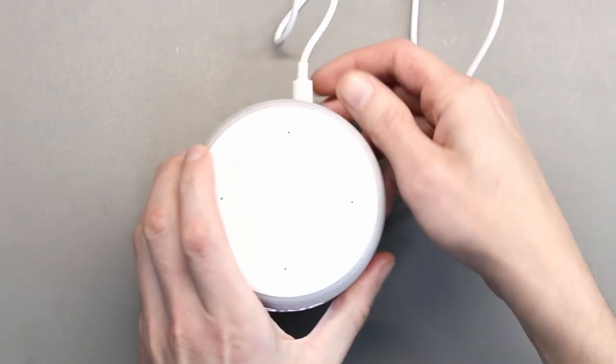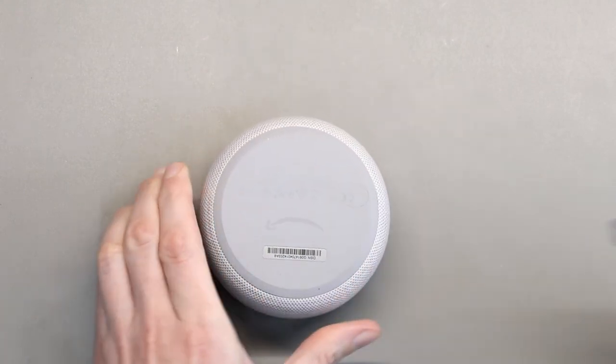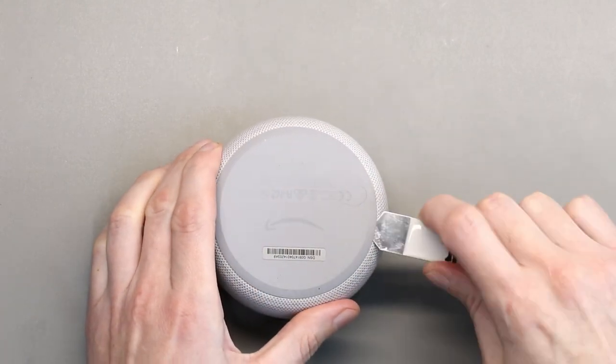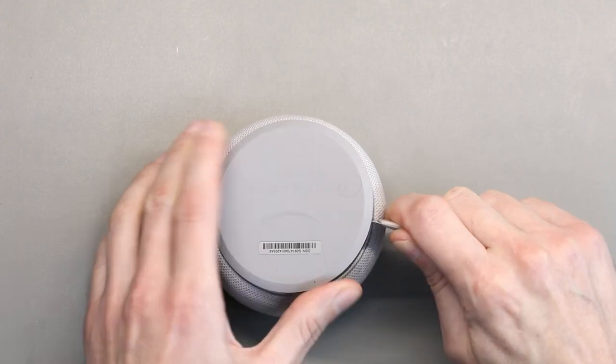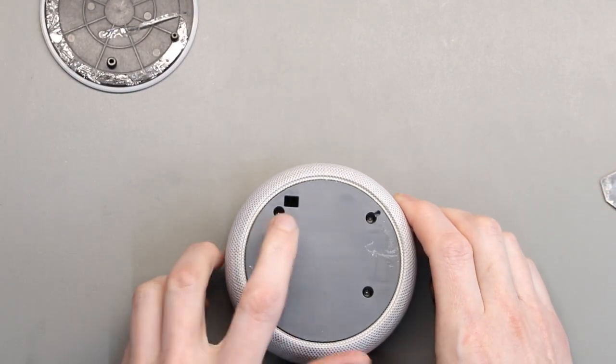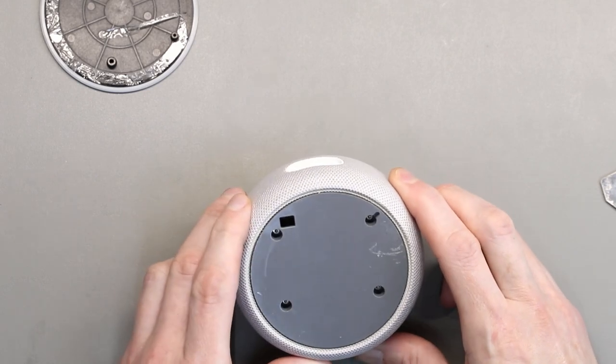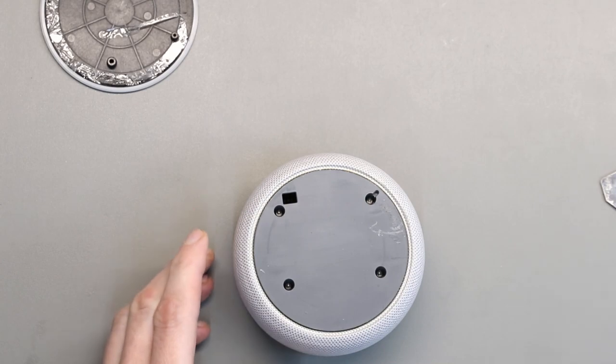So it starts off, let's disconnect the power. Now the bottom's got a rubber pad which just needs to be removed. And in the base of the unit there's the debug USB port, same as the previous version, and four torque screws which need to be removed.